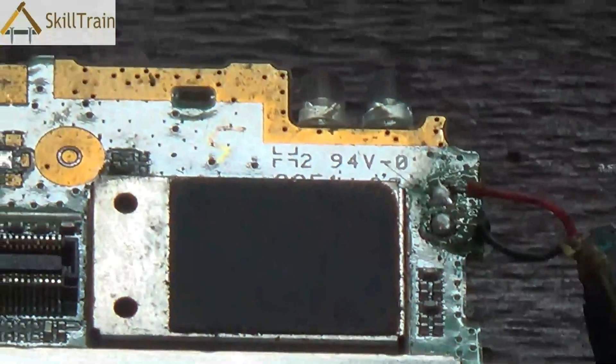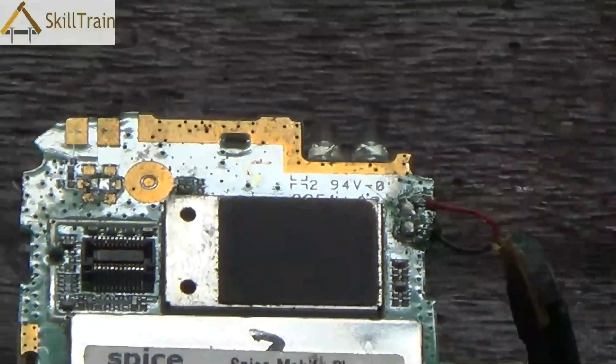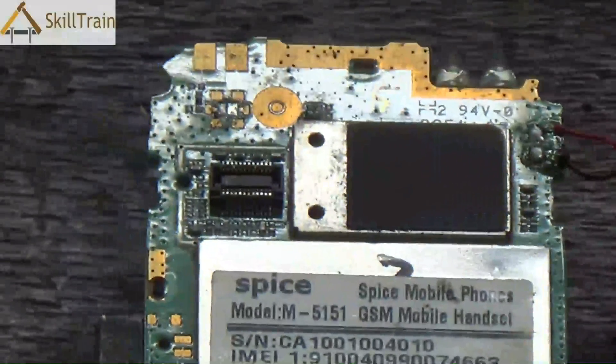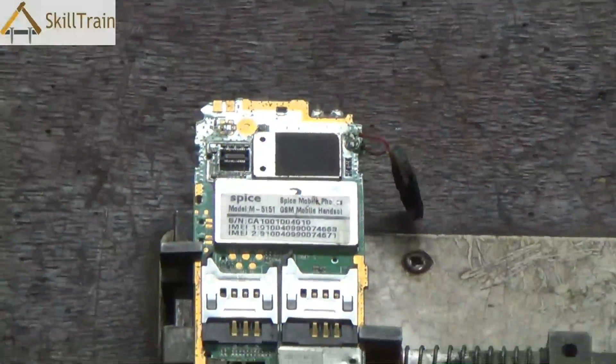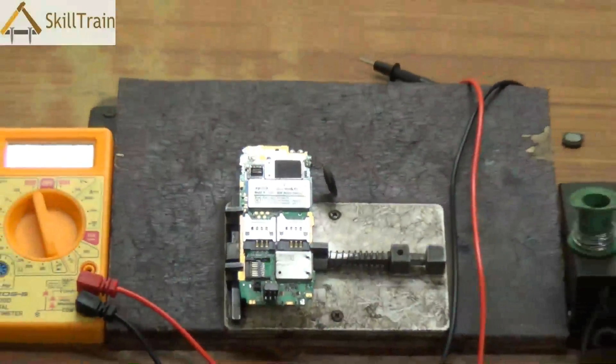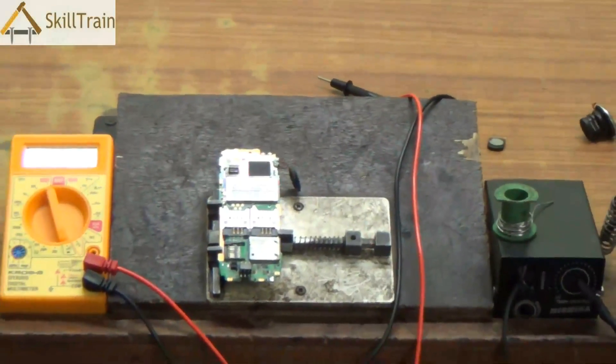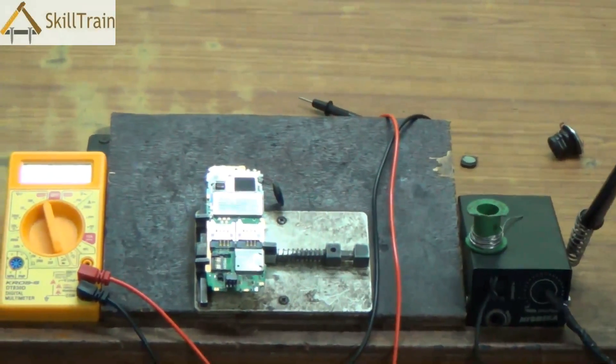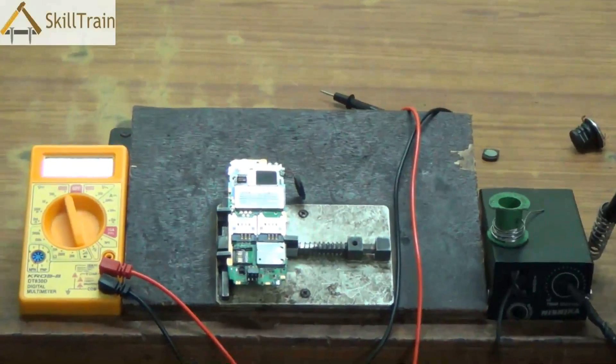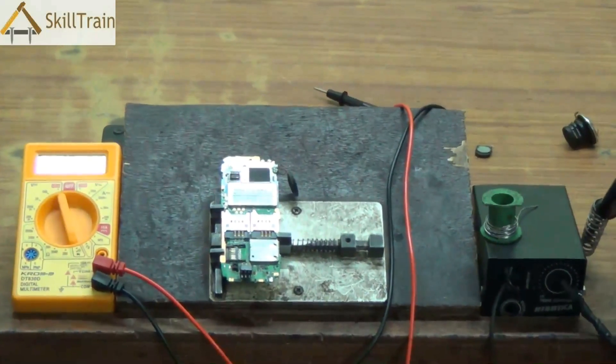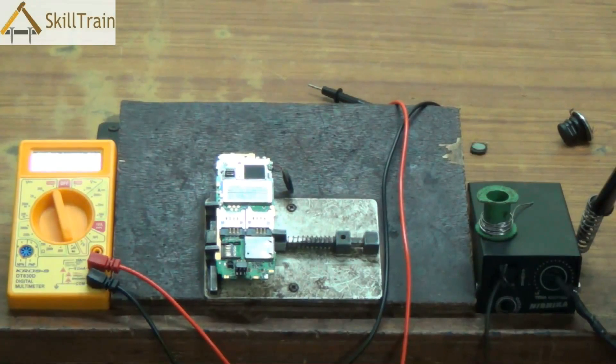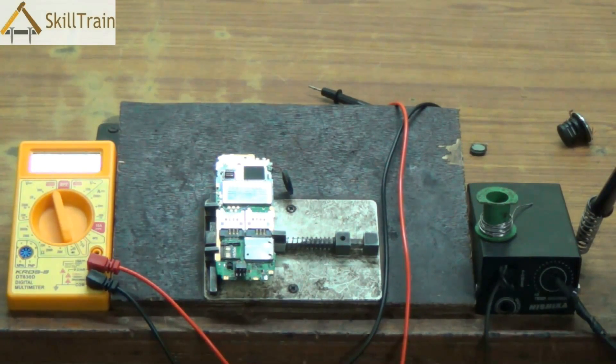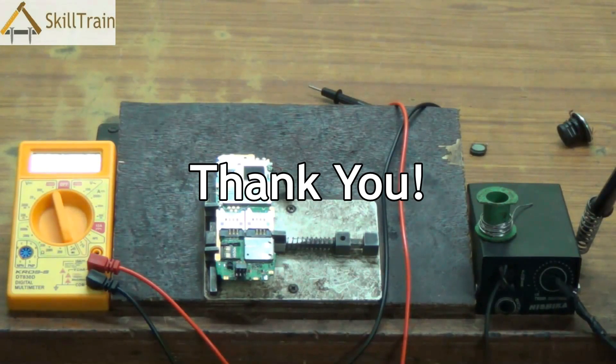Also ensure that you don't pull the ringer while you are removing the ringer from the mobile PCB. So hopefully, we hope that you would have understood how we can detect the problem in the ringer and how we can replace the ringer with a completely new ringer. Going forward, we will keep learning more about these faults in future videos. Continue learning. Thank you very much.